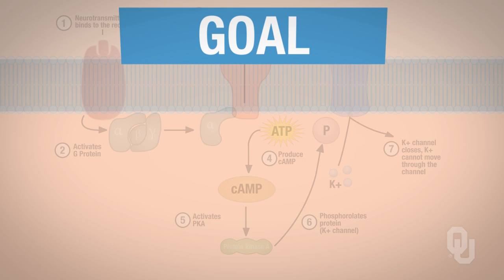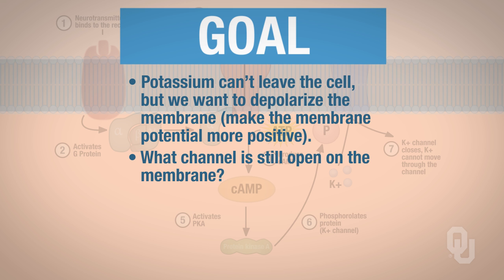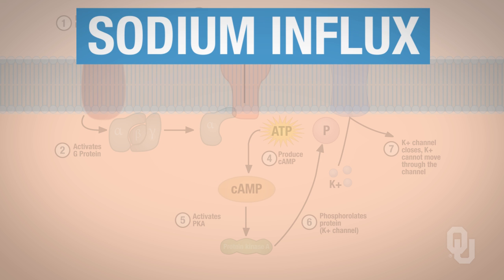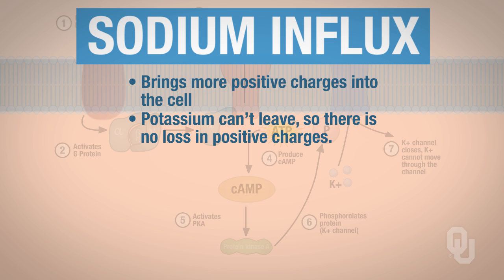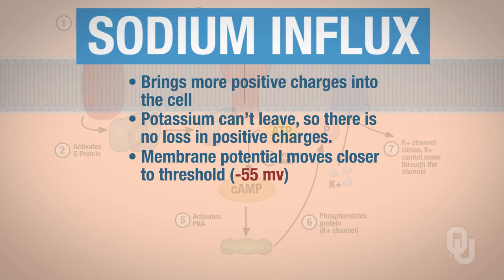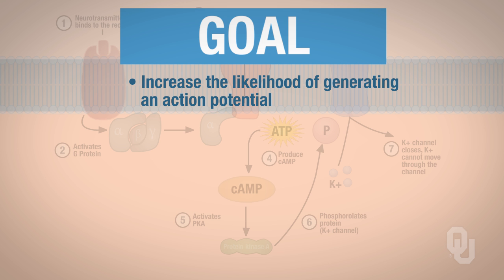Remember the goal: potassium cannot leave the cell, but we want to depolarize the membrane — we want to make the membrane potential more positive. What channel is still open on the membrane? Those are the sodium channels. We have sodium influx, and when we have sodium influx, that brings more positive charges into the cell. Potassium cannot leave, so we don't have positive charges leaving the cell — we only have positive charges coming in. So the membrane potential moves closer to threshold, which is negative 55 millivolts, increasing the likelihood of generating an action potential on the postsynaptic cell. Those are two examples of how we generate a fast and a slow excitatory postsynaptic potential, both with the same goal of increasing the likelihood of generating an action potential.